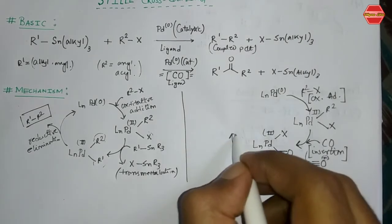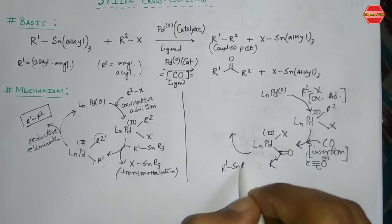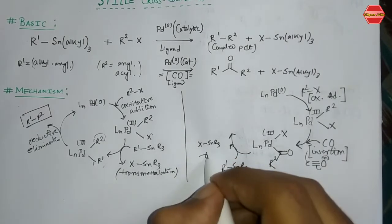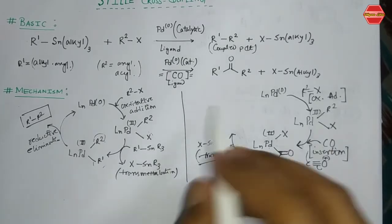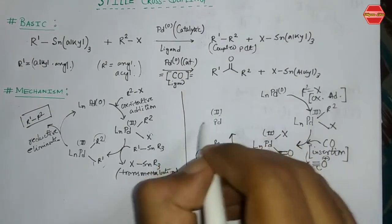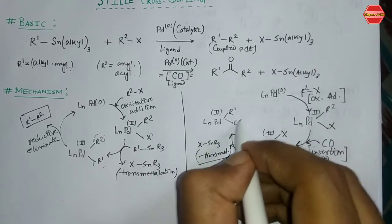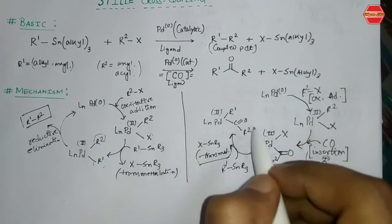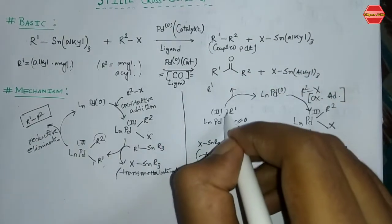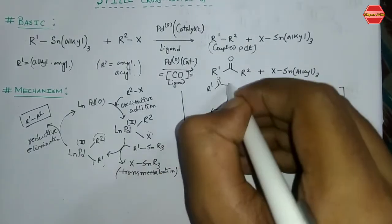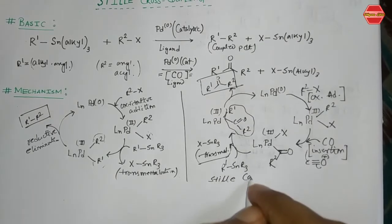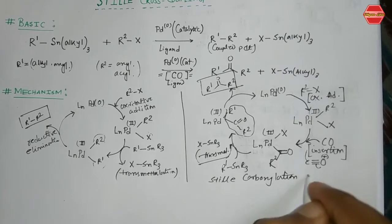From this acyl-palladium intermediate, transmetalation occurs using the organostannane R1-SnR3. X-SnR3 leaves as the byproduct. After transmetalation, palladium(II) with the ligand now carries both the R1 group and the R2-C=O acyl group. The final step is reductive elimination, which gives the ketone product R1-C(=O)-R2, and palladium(0) is regenerated. This is the Stille carbonylation cross-coupling reaction.